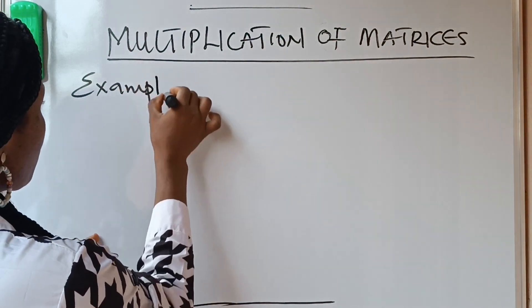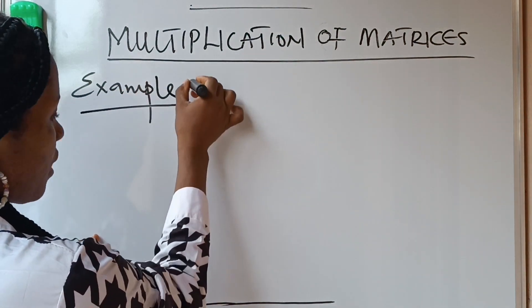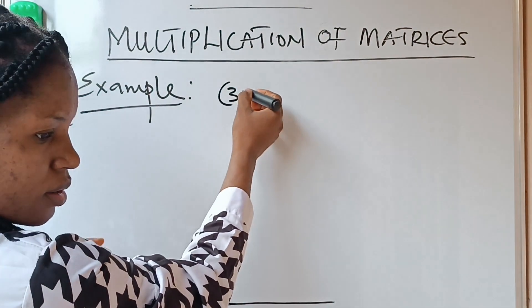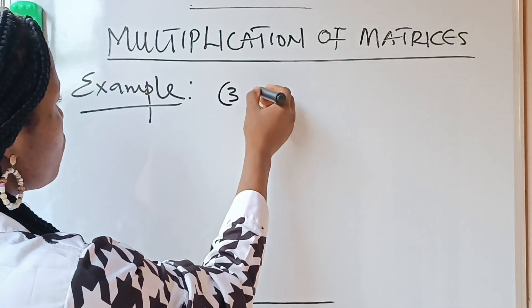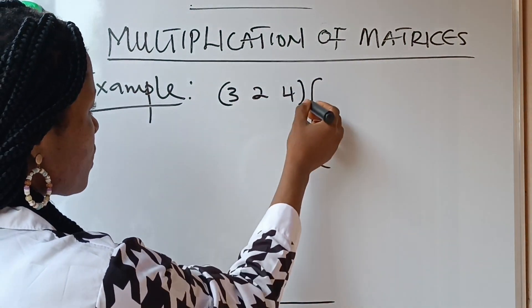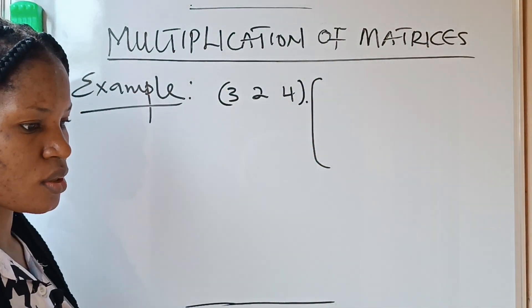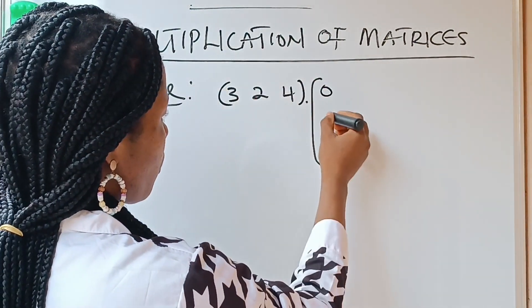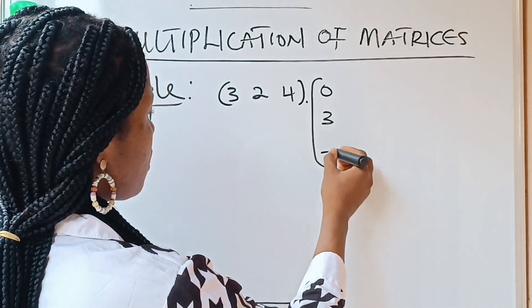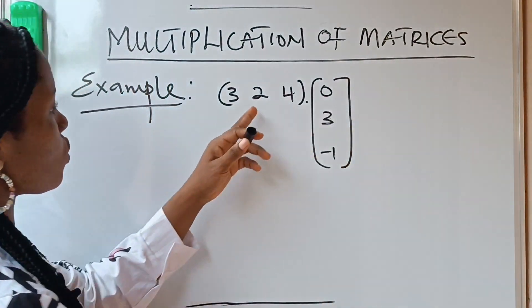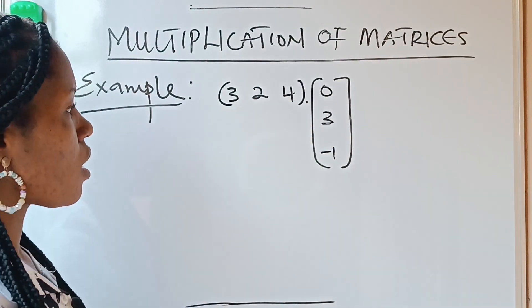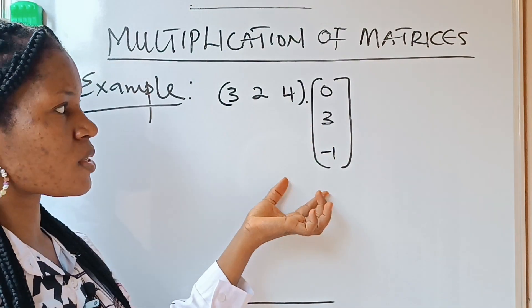You are asked to multiply: the matrix [3, 2, 4] — this dot means multiplication — times the column matrix [0, 3, −1].